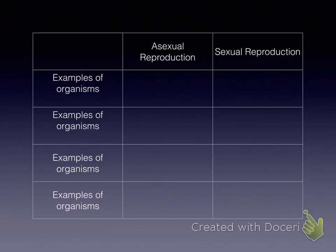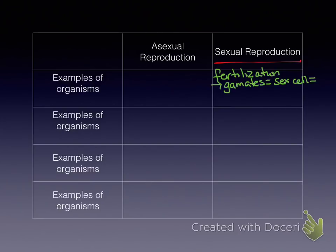Now we're going to talk about sexual reproduction examples. The first thing is fertilization. Fertilization occurs when gametes — which are sex cells, basically the sperm or the egg — become fertilized. So fertilization occurs when the sperm fertilizes the egg. Gametes is the scientific term for the generalization of sperm and egg.